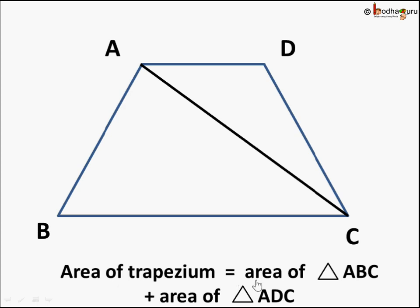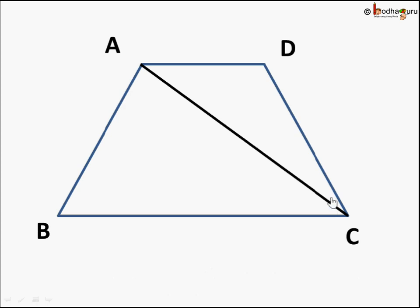Area of trapezium is area of triangle ABC plus area of triangle ADC. So how do we find that area of triangle ABC? Let's say BC is the base. We draw a line from the opposite vertex of BC which is A, perpendicular line towards BC. So here is meeting at 90 degrees. This becomes the height of this triangle and this is the base. So its area will become half of base into height.